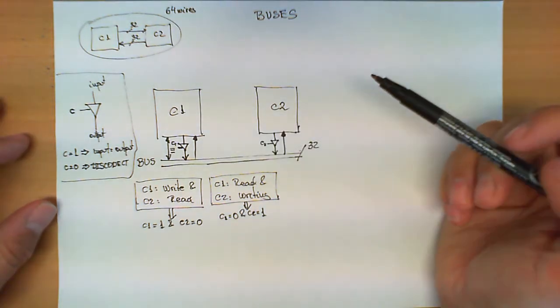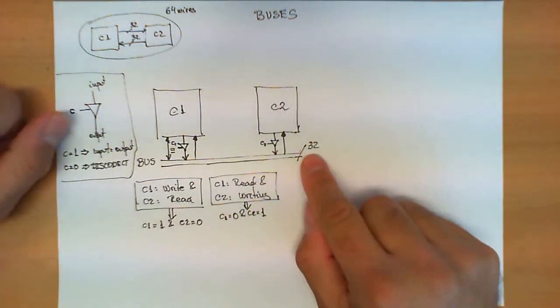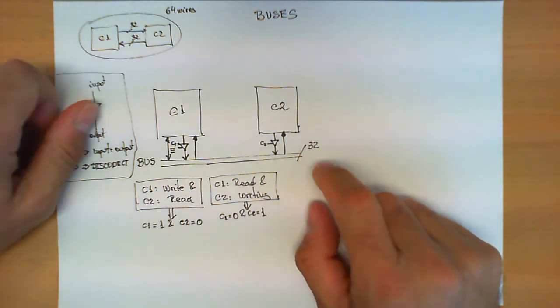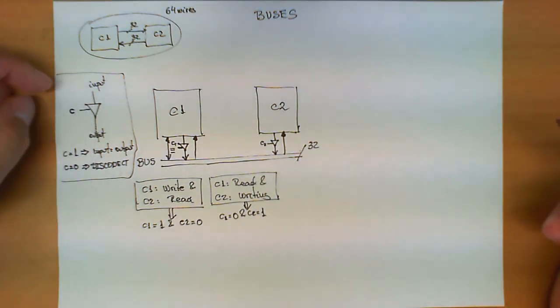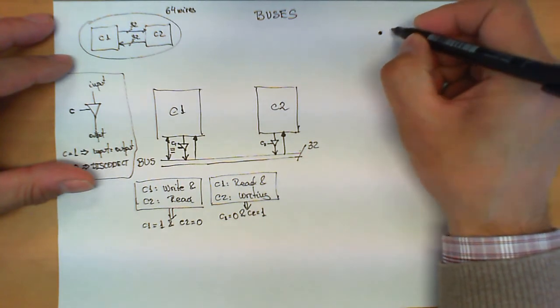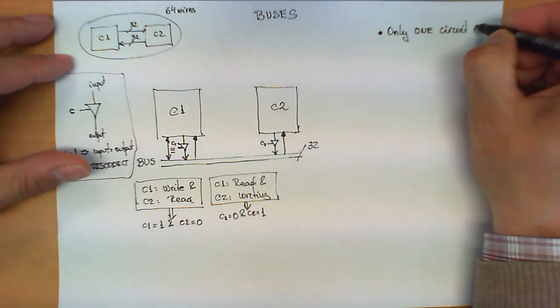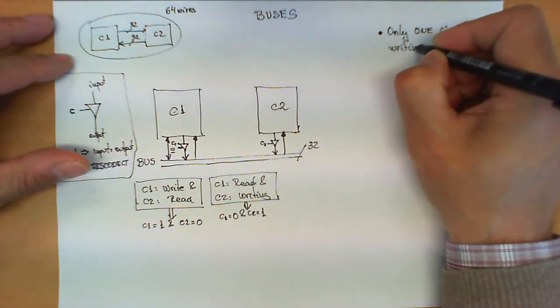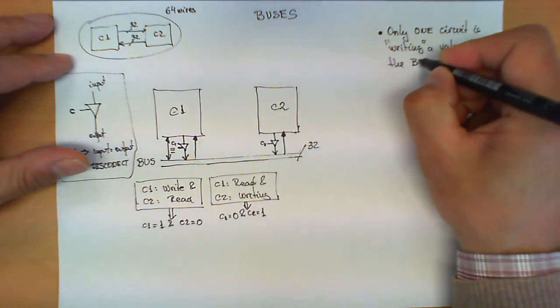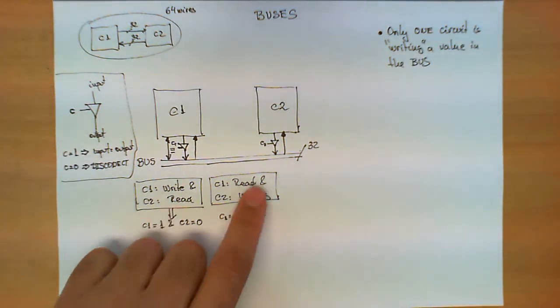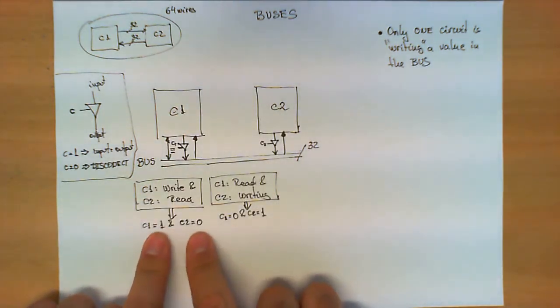As we can see, the advantage of this scheme over this one is that by using only 32 wires rather than 64, now we can manage to implement bidirectional communication between these two circuits. However, there is a very important property that we haven't mentioned that is fundamental for buses to work. Only one circuit is writing a value in the bus.